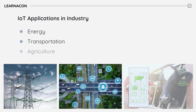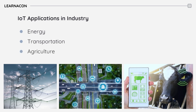IoT is very popular in livestock monitoring. Sensors on livestock track health and activity data, which is analyzed to detect health issues and optimize feeding schedules. This ensures real-time monitoring and early intervention for livestock well-being.